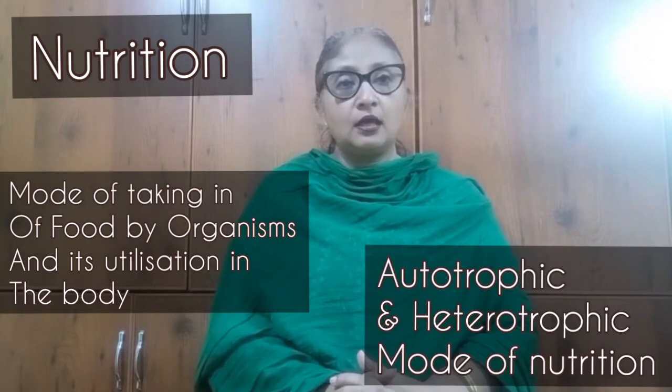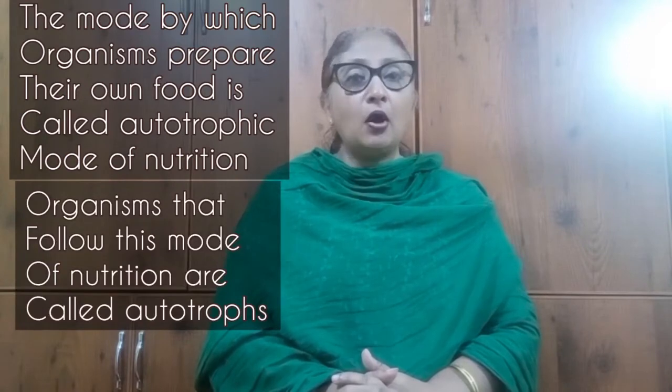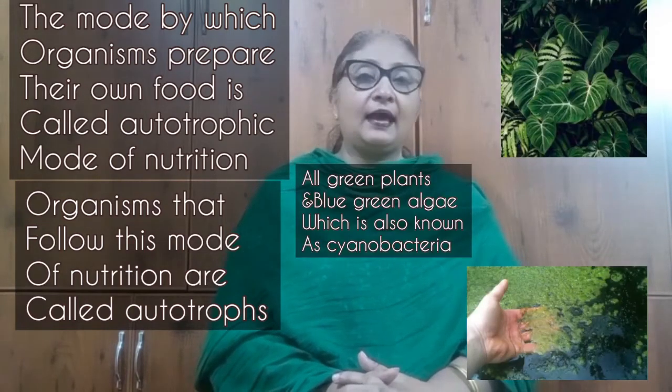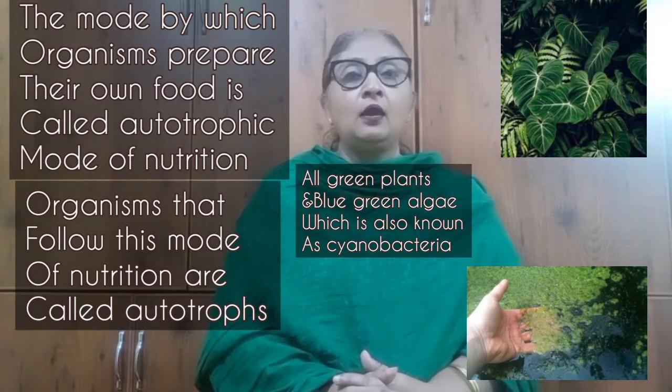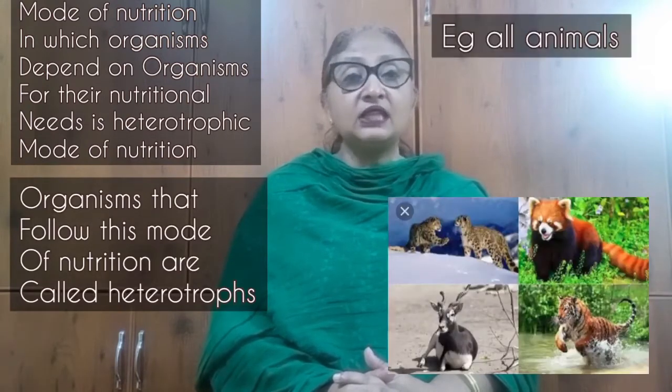The two modes are the autotrophic mode and the heterotrophic mode. The mode by which organisms can prepare their own food is known as autotrophic mode of nutrition, and the organisms which follow this mode are known as autotrophs — for example, all green plants and blue-green algae, otherwise known as cyanobacteria. The mode where organisms depend on other organisms for their nutritional needs is known as heterotrophic mode of nutrition, and those organisms are known as heterotrophs.